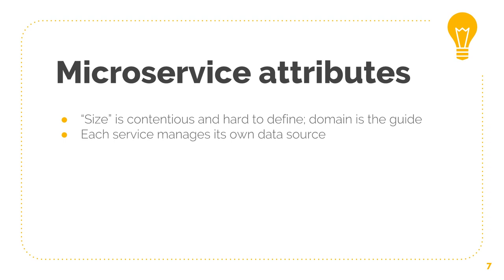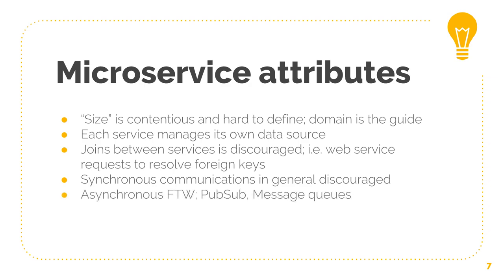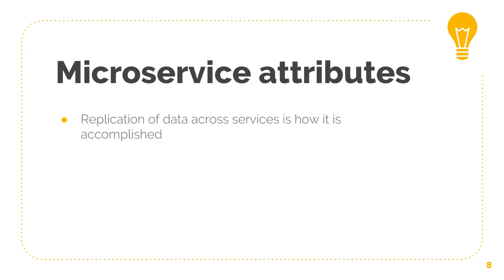In the microservices world, it's considered best practice to have each service manage its own data source — meaning you have a database per service that is not shared between your microservices. Joins between services is discouraged — and by joins I mean you don't want to have web service requests to resolve your foreign keys between the disparate databases across your microservices. That means synchronous communications in general is discouraged, and asynchronous communications is where you want to try and push the envelope for communicating between your services.